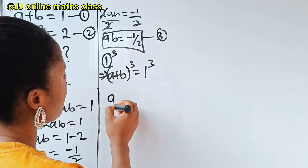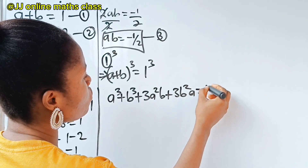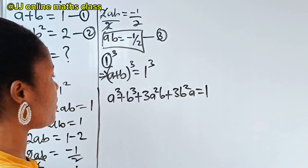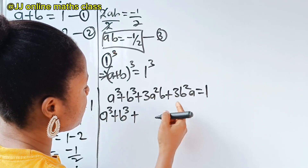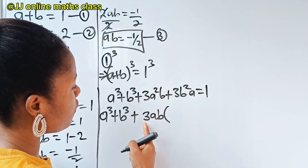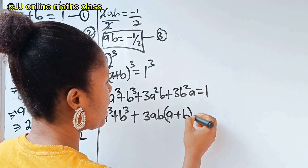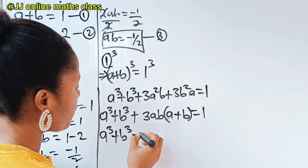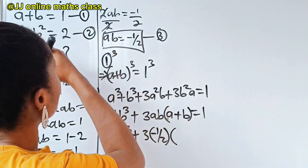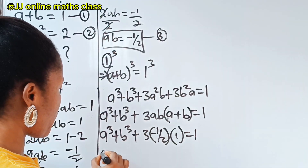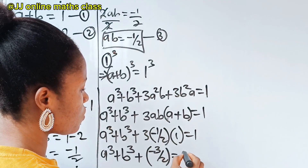So equation 1 cubed gives us a plus b raised to the power of 3 is equal to 1 raised to the power of 3. In algebra, this expands to a to the power of 3 plus b to the power of 3 plus 3a squared b plus 3b squared a, which equals 1. We can factorize the last two terms as 3ab multiplied by a plus b. Recall that our ab is minus 1 over 2, and a plus b is 1. So we have a to the power of 3 plus b to the power of 3 plus 3 times minus 1 over 2 times 1, giving us a cubed plus b cubed minus 3 over 2 equals 1.